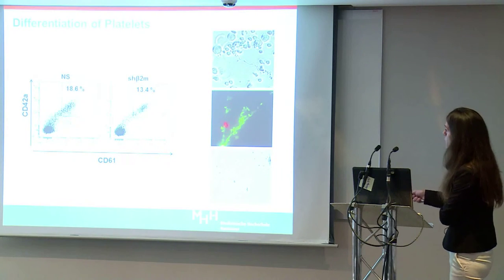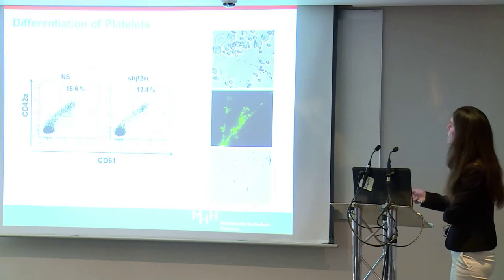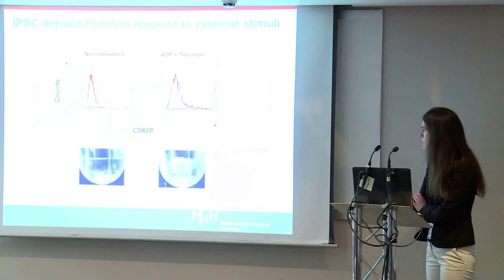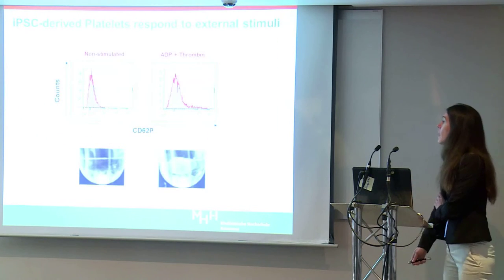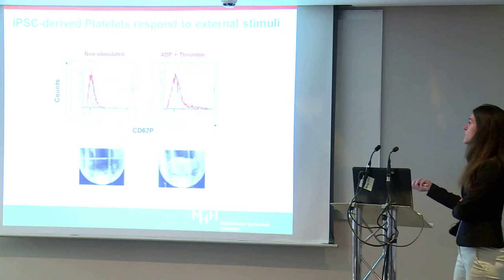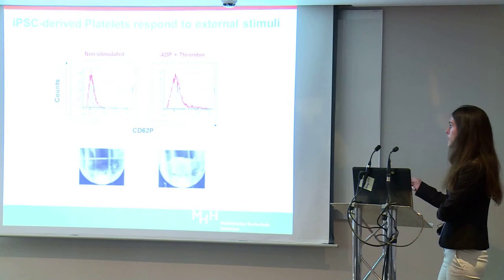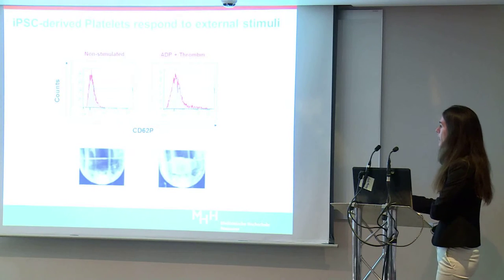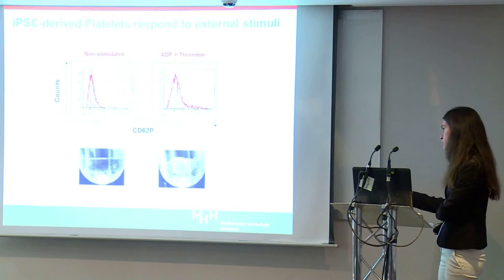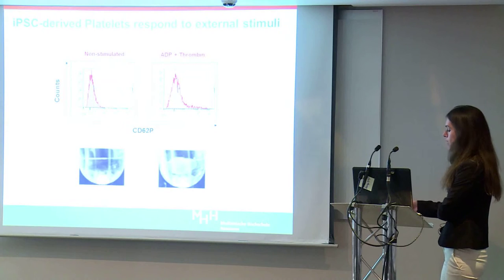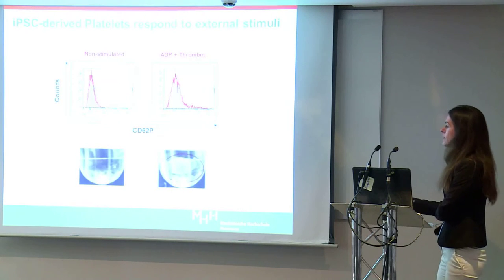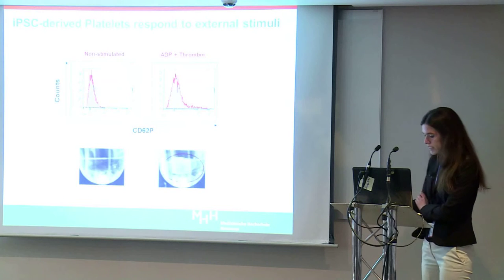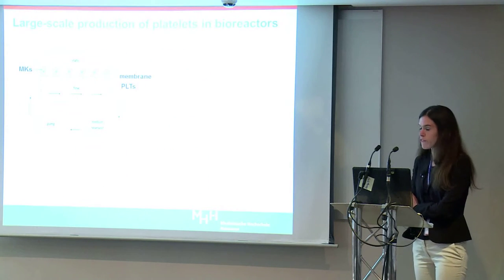We continued further with megakaryocyte differentiation into proplatelets, which were able to generate platelets. Harvested platelets from cell culture supernatant were stimulated with platelet agonists ADP and thrombin. They were able to upregulate platelet activation markers and could also aggregate — a typical characteristic of platelets — demonstrating that they were functional.